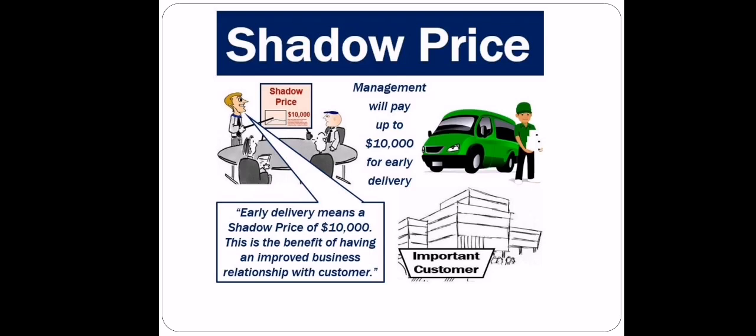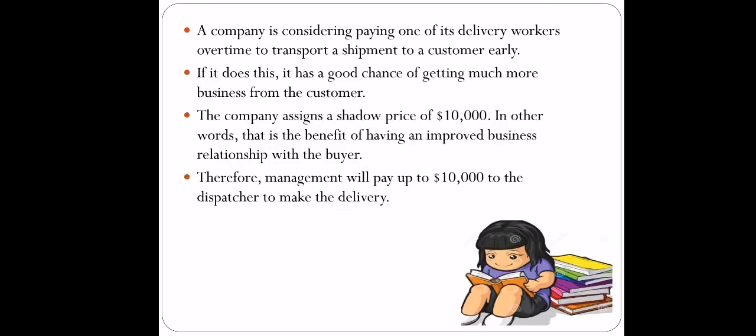The company is willing to pay up to $10,000 for early delivery. A company was considering paying one of its delivery workers overtime to transport a shipment to a customer early, and if it does so, there is a good chance of getting much more business from that customer. The company assigns a shadow price of $10,000 — that is the benefit of having an improved business relationship with the buyer. Therefore, management will pay up to $10,000 to the dispatcher to make the delivery, and this $10,000 is the shadow price of working overtime for early delivery.